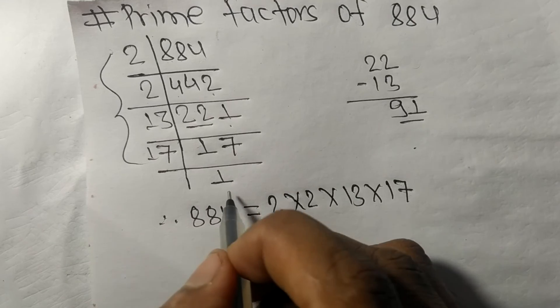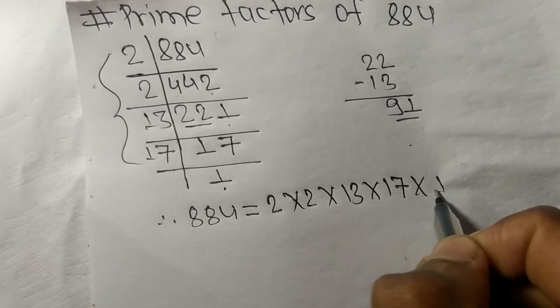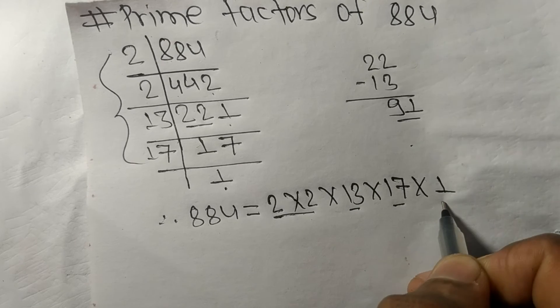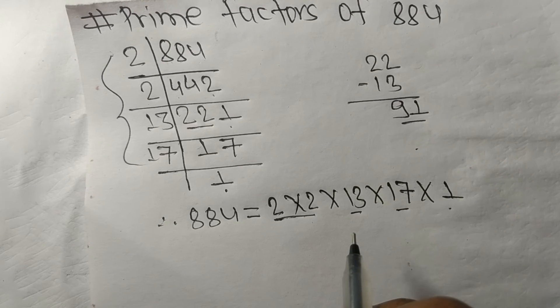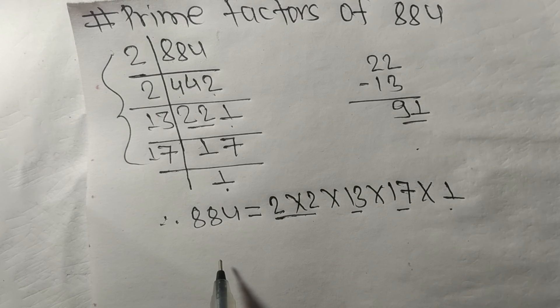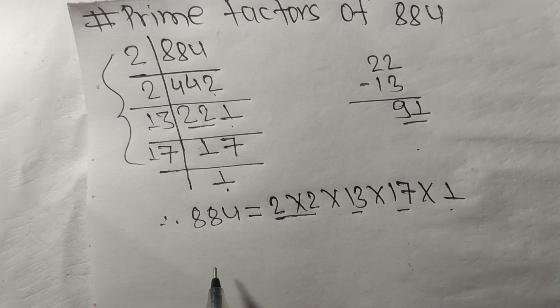So 2, 13, and 17 are the prime factors of 884. That's all for today, and thanks for watching.